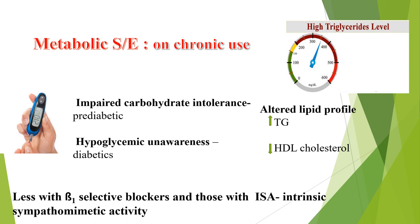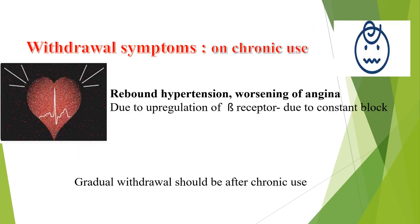Beta blockers alter lipid profile by increasing triglyceride levels and decreasing high-density lipoprotein cholesterol, with less effect seen with beta-1 selective blockers and those with intrinsic sympathomimetic activity. Withdrawal symptoms on chronic use: if a patient is taking beta blockers long-term, the dose should be tapered gradually to avoid rebound hypertension or worsening of angina due to upregulation of beta receptors from constant blockade.